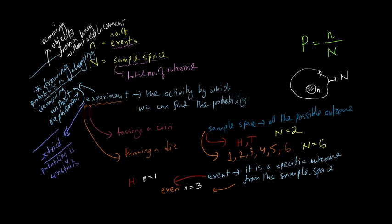For example, suppose in a bag we have different colored socks and you're removing the socks without replacing them. Every time you do the experiment — one time, two times, three times — the probability is changing. That's a classic example of a draw experiment. On the other hand, if you take one sock, look at it, and then put it back, the probability is not changing. So it is possible in a draw experiment that the probability will not change, but most of the time the object is removed.